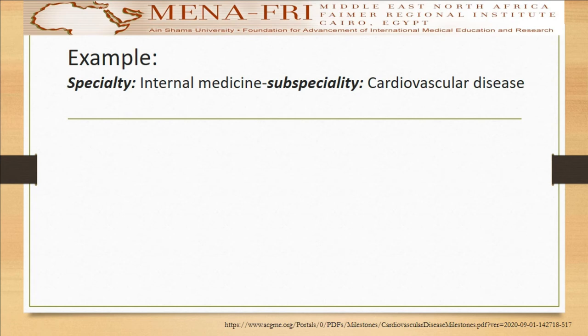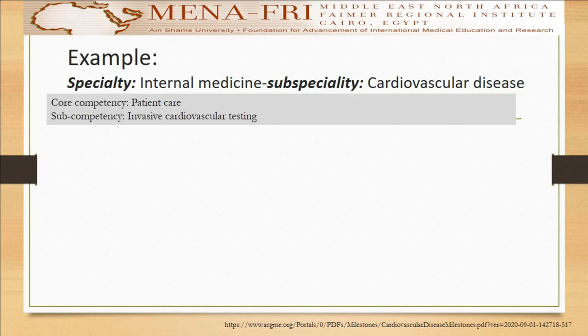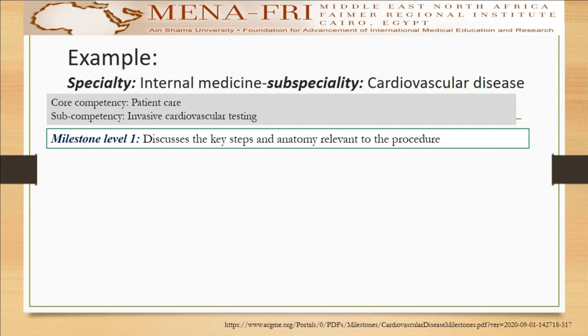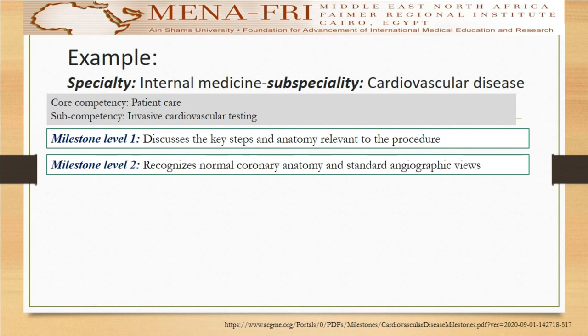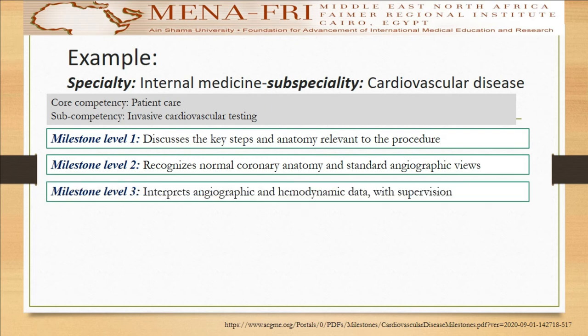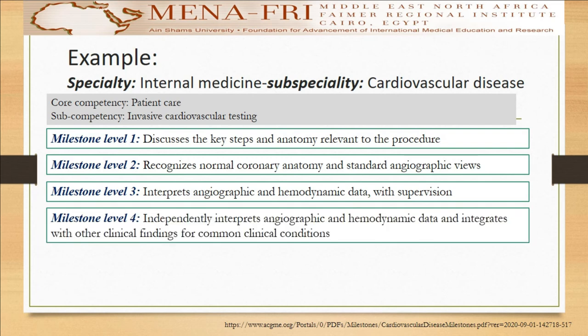Another example is in the subspecialty of cardiovascular disease. If the core competency is invasive cardiovascular testing, the first milestone will be to discuss the steps and anatomy relevant to the procedure. At the second level, you will recognize normal coronary anatomy and the standard angiographic views. At the third level, you will interpret angiographic and hemodynamic data with supervision. And at the fourth level, you will independently interpret angiographic and hemodynamic data and integrate it with other clinical findings for common clinical conditions.